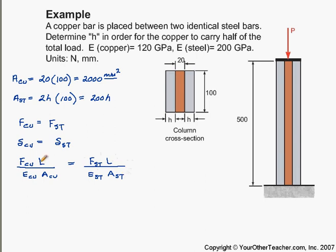Well some things cancel. The links are the same. And the two forces are the same, because each are taking half of the load. And so solving for area of steel, we get area of steel is equal to E of steel times area of copper divided by E of copper.